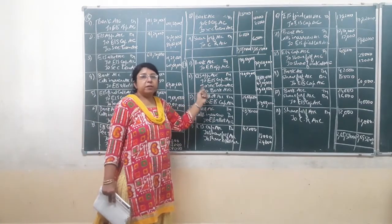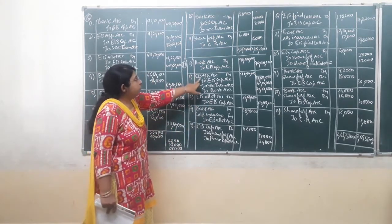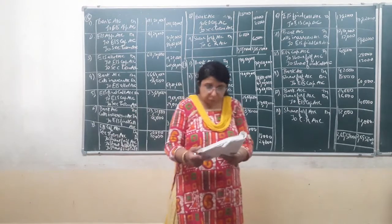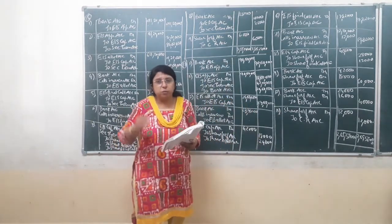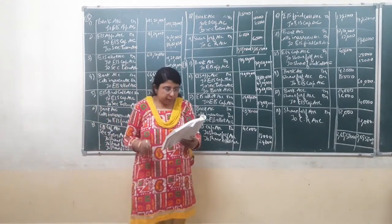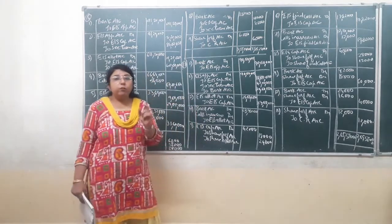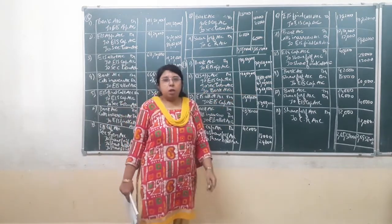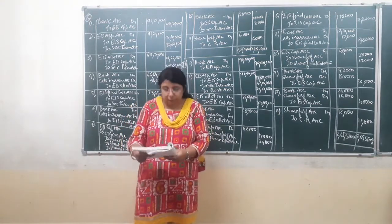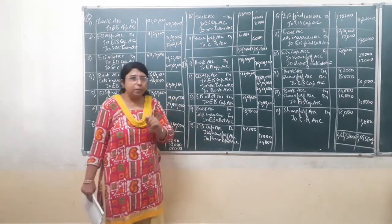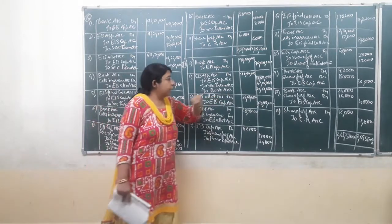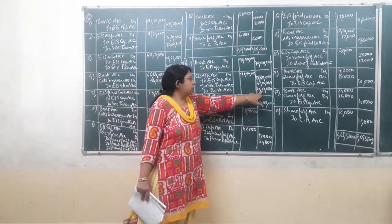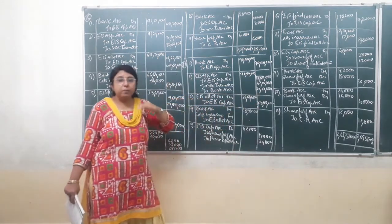Equity share application account is debited for the same amount Rs. 90,00,000. Equity share capital account is credited: we consider only 6,00,000 shares, not 9,00,000 shares, since the extra 3,00,000 shares are being returned. So 6,00,000 shares multiplied by Rs. 3 per share face value at application comes to Rs. 18,00,000. Securities premium account is credited for 6,00,000 shares multiplied by Rs. 7 premium, coming to Rs. 42,00,000. Bank account is credited for 3,00,000 excess shares multiplied by Rs. 10 per share including premium, reducing bank balance by Rs. 30,00,000.